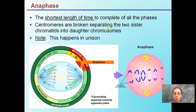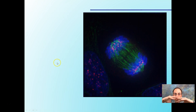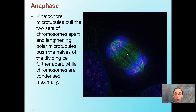Anaphase is the shortest phase to complete. Centromeres are broken apart, splitting the two sister chromatids into daughter chromosomes. All chromosomes that were lined up on the plate are now being pulled to the poles simultaneously. This happens in unison because they're all in alignment. The kinetochore microtubules pull the two sets toward the poles, creating two halves of the dividing cell.